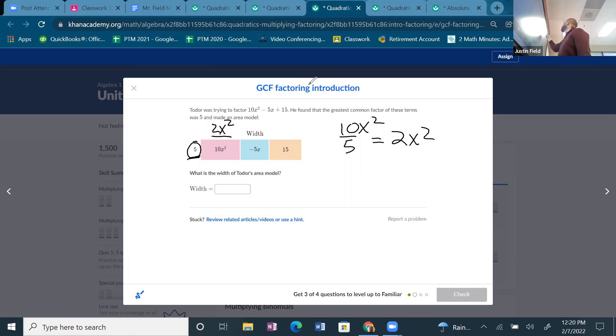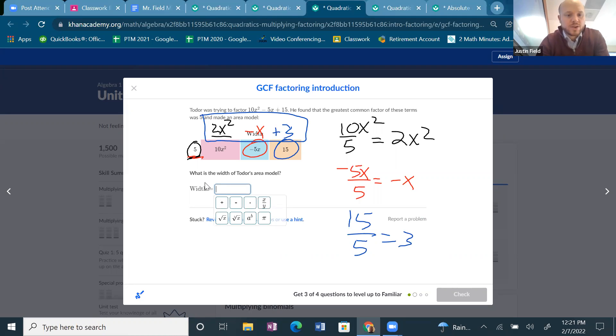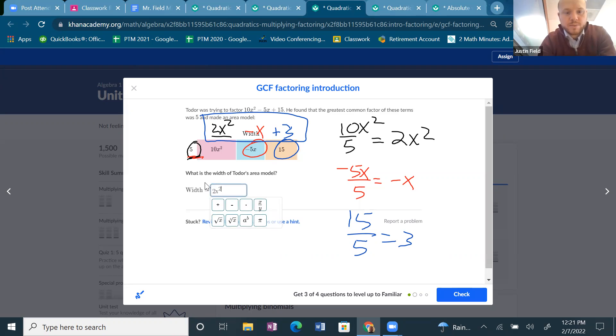Then, the next one, I'm going to take that term divided by what I see in front, and that would be negative x. That means there's a negative x up there. And then, take the 15 and divide it by the 5, and that's 3. So, the width of this rectangle is 2x squared minus x plus 3.